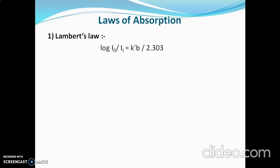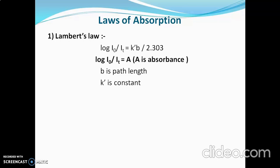The equation of Lambert's law is: log(I0/It) = k'b / 2.303, where log(I0/It) is absorbance, b is the path length of the sample cell, and k' is the constant. The final equation is A = k'b / 2.303.